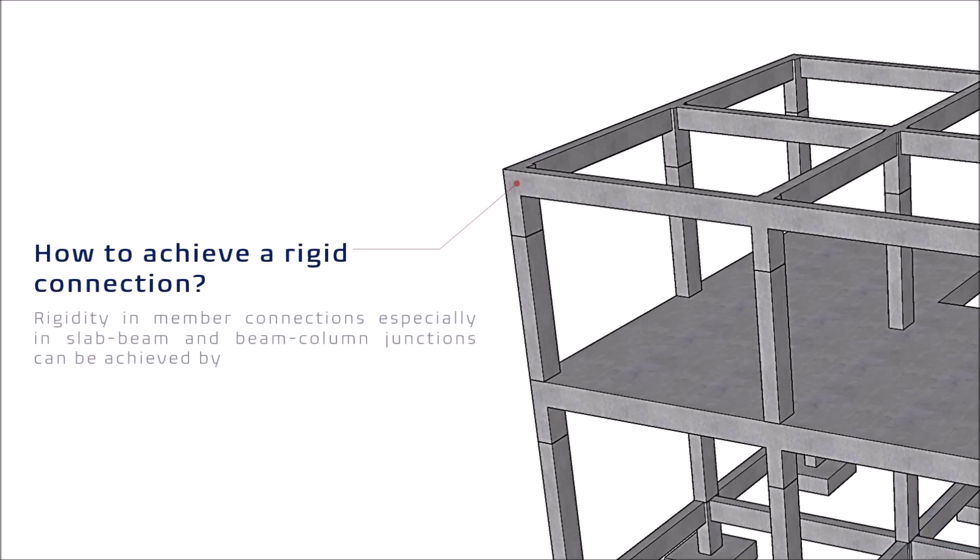Ang fixed supports sa beam-column connection can be achieved kung ang concrete sa bahaging ito ay monolithic. Ibig sabihin, sabay ang buhos ng beam including ang slab at ang certain portion ng supporting column na nasa underside ng beam.